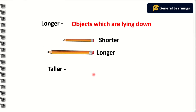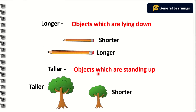Taller refers to objects which are standing up. For example, a tree — a tree is in a standing position, so we say the tree is taller.